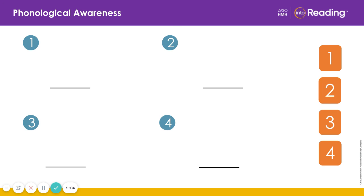Knee. The word knee has the sounds n-e. There are two sounds. The next word is sun. The word sun has the sounds s-u-n. Three sounds.